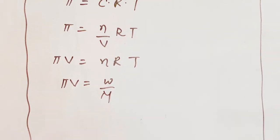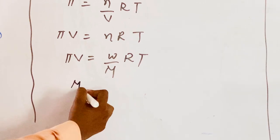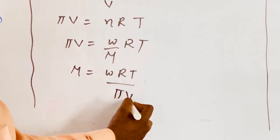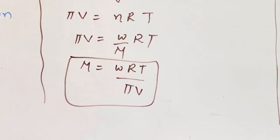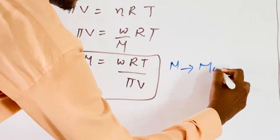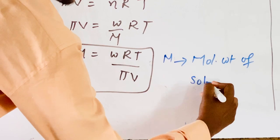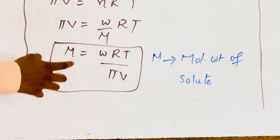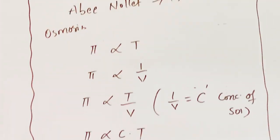From the Van't Hoff equation, we can derive the molecular weight of the solute: M = WRT / (Pi × V), where M represents the molecular weight of the solute. This means the molecular weight of an unknown solute can be determined using osmotic pressure according to Van't Hoff's law.